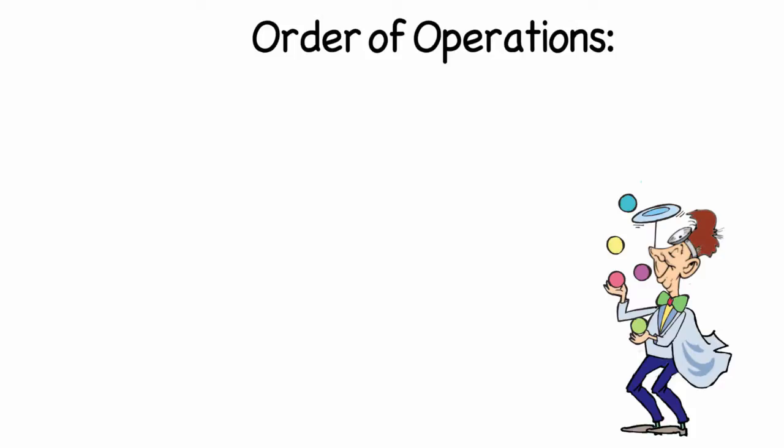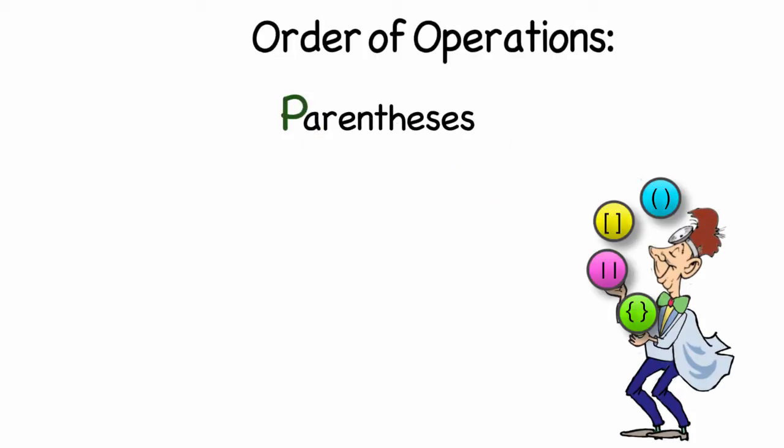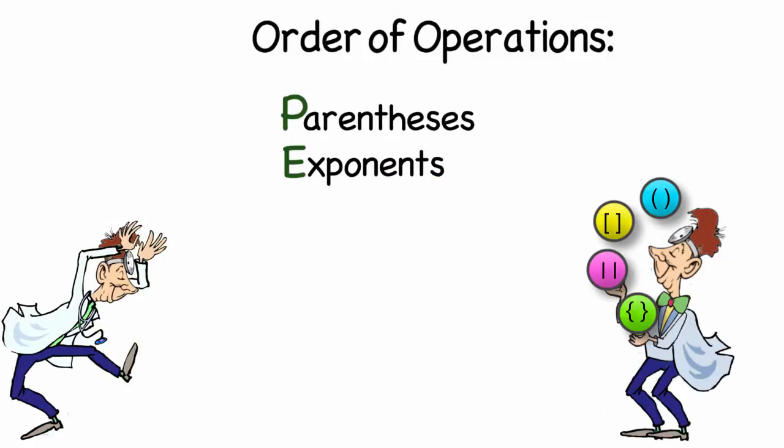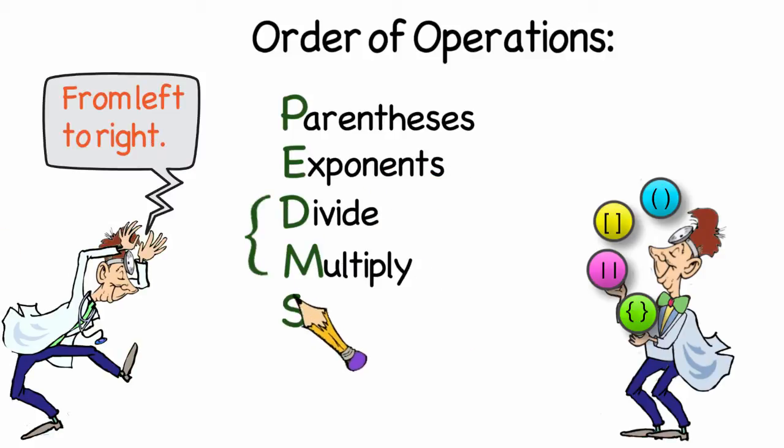However you choose to remember the rule for the order of operations is up to you. As long as you're remembering to do what's in the parentheses and other grouping symbols first, then you're going to multiply out the exponents. After that, you'll be dividing and multiplying from left to right, and last, you'll be subtracting and adding from left to right.